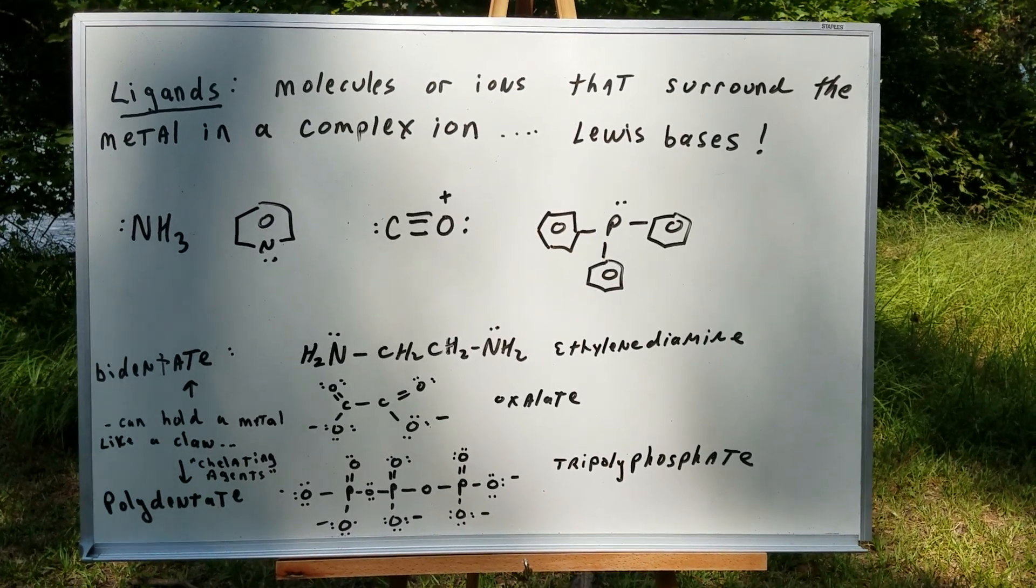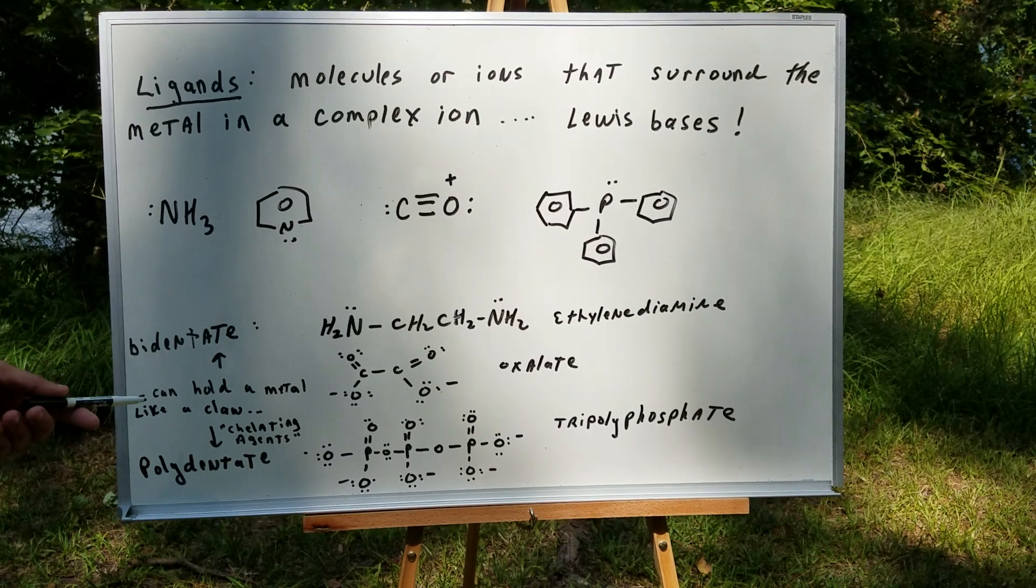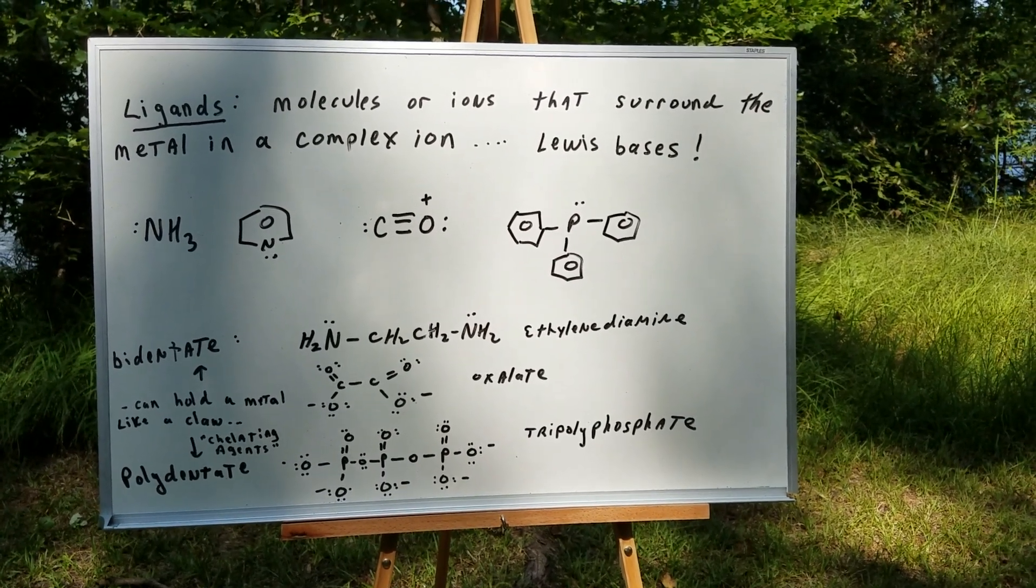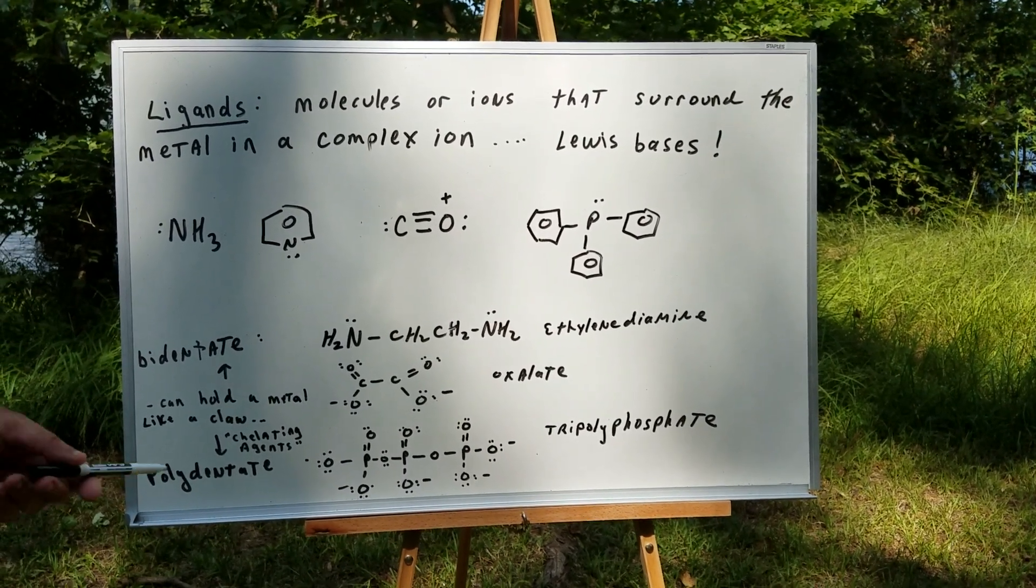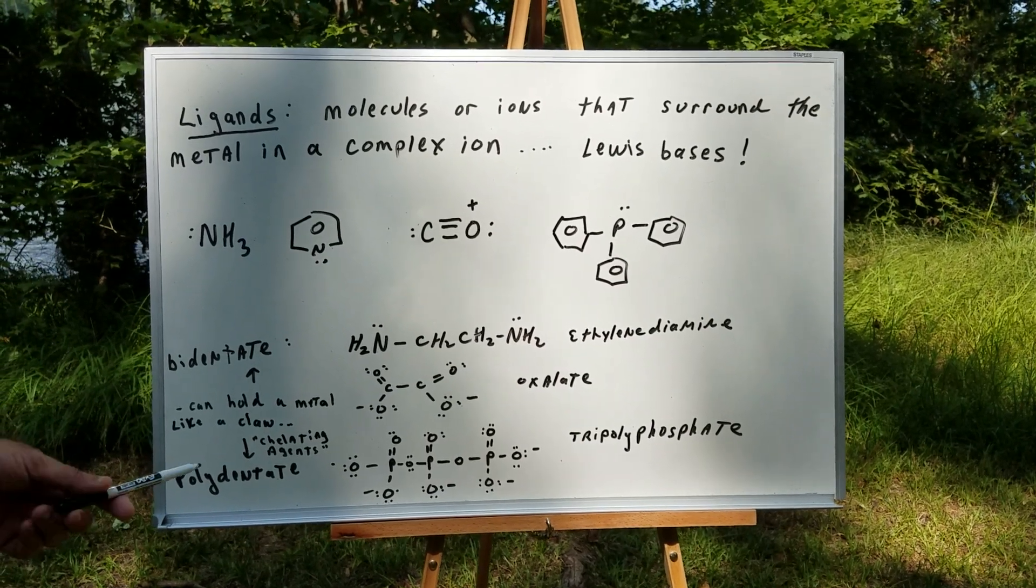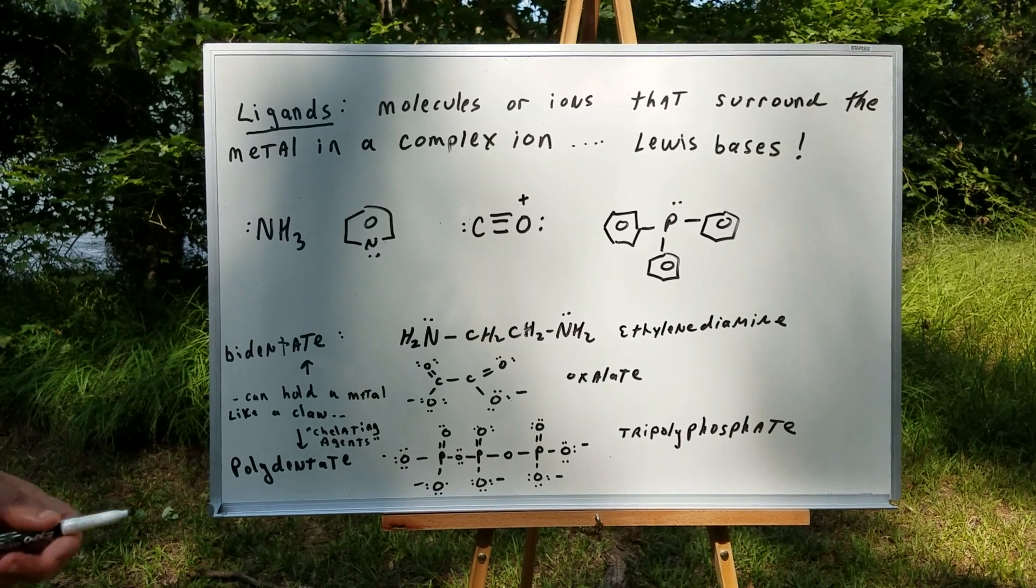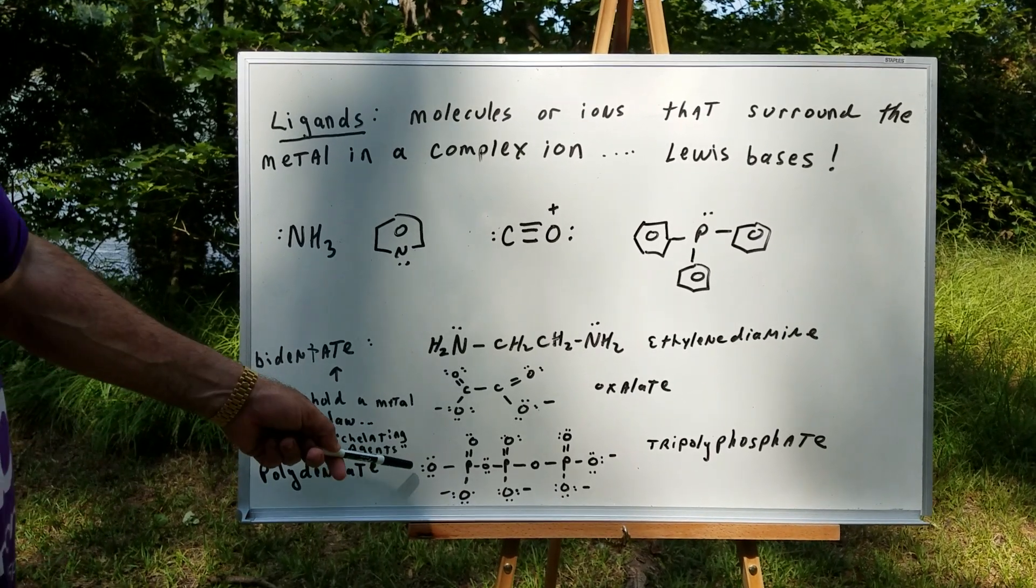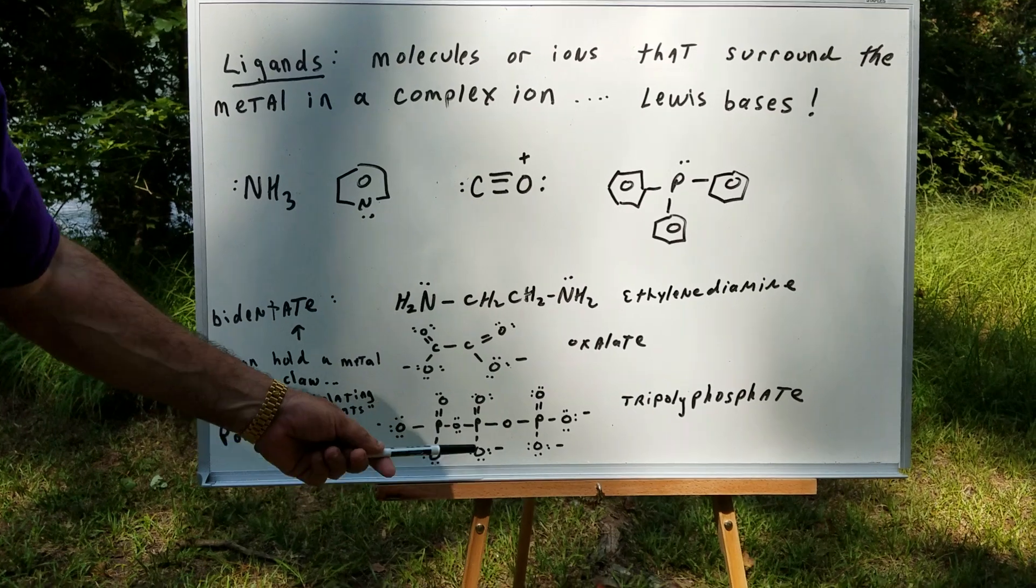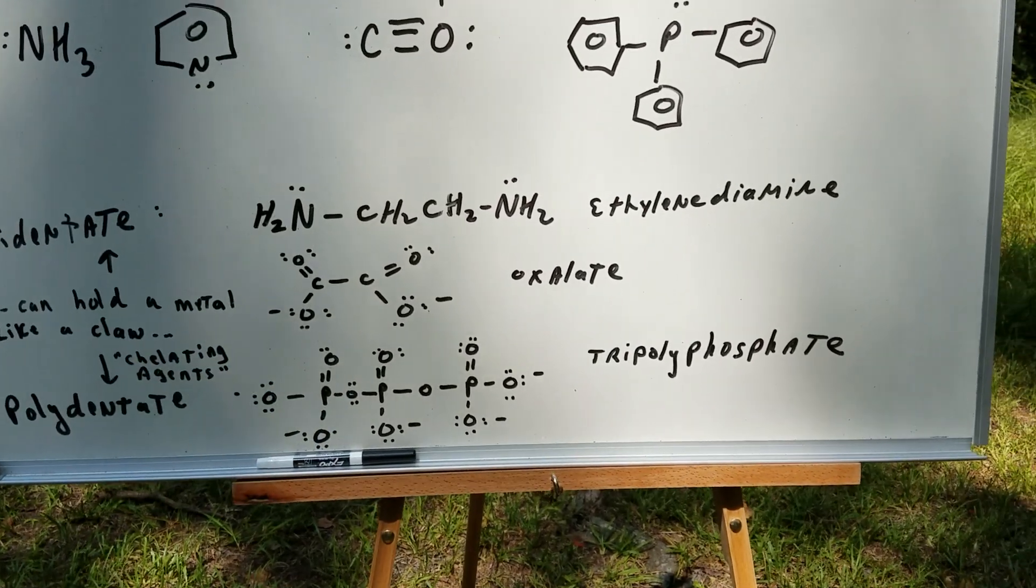We can also have polydentate. Polydentate can also hold metals like a claw, these are good chelating agents. Here's a really good example. I bet you've never seen an ion with a minus five charge. This is tripolyphosphate anion, and as you can see it's got a whole bunch of different sites that we can bind different metals to.